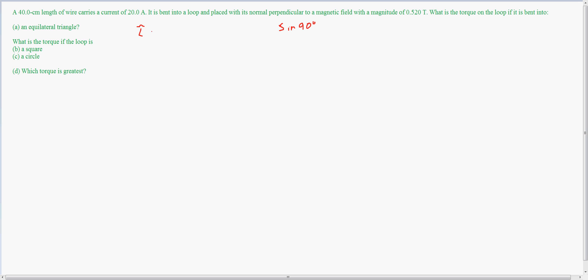Torque in this case is equal to U, or the magnetic dipole moment, cross B, which is equivalent to I times the area times B times sine theta, which as we said would be sine of 90 degrees which is equal to 1.